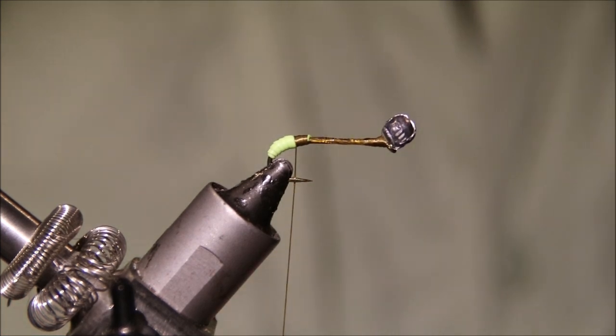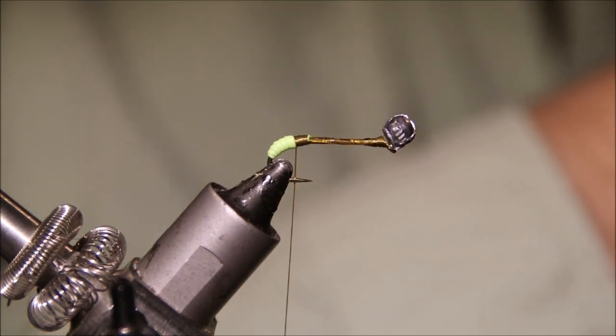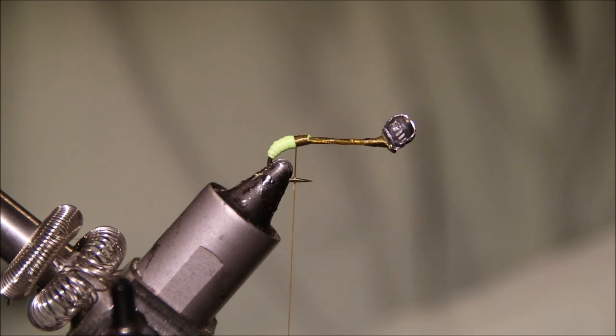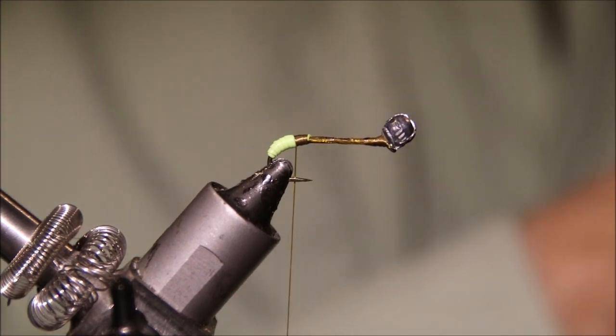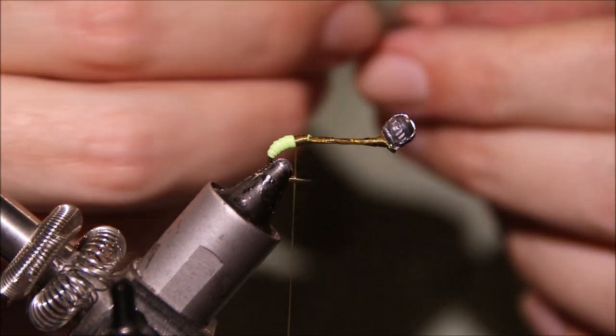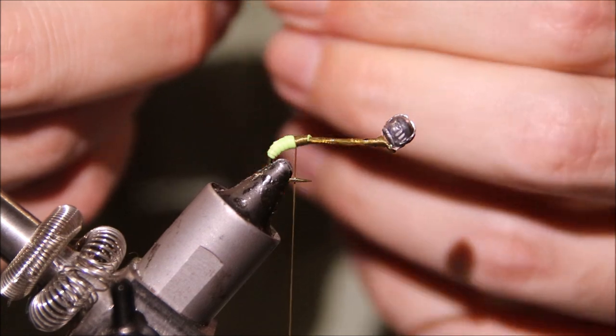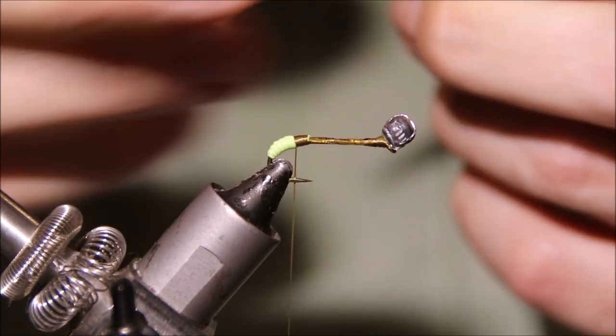For the legs, I'm going to use a brown partridge feather from the back between the shoulders of the bird, or you can just buy a packet. I want a fairly long fibered hackle. I'll trim away the fluff or the waist.